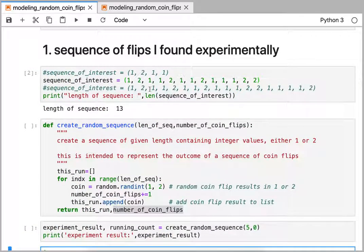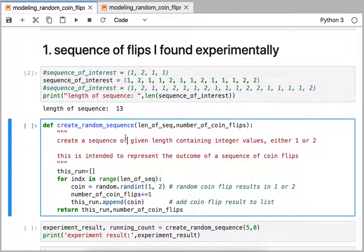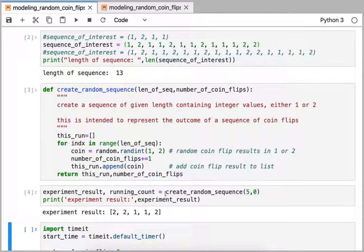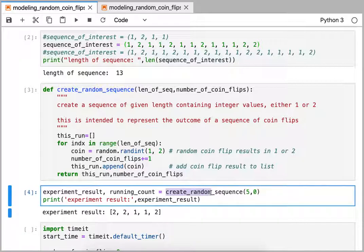As a way of validating that this random sequence generator works, we're going to see what that looks like when we provide the create_random_sequence two arguments: creating a sequence of five coin flips, and so far we've done no coin flips.